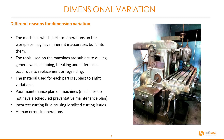There are different reasons for dimensional variation. The machines which perform operations on the workpiece may have inherent inaccuracies built into them. The tools used on the machines are subject to dulling, general wear, chipping, breaking, and differences occur during replacement or regrinding. The material used for each part is subject to slight variations. Machines do not have a scheduled preventative maintenance plan. Incorrect cutting fluid causing localized cutting issues and human error in operations.